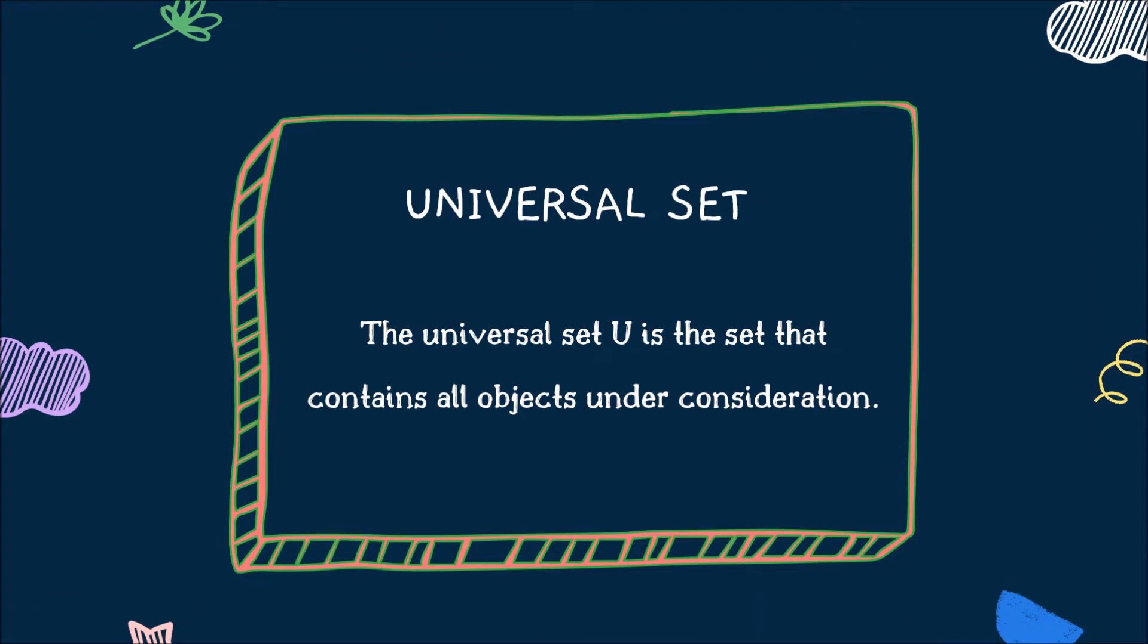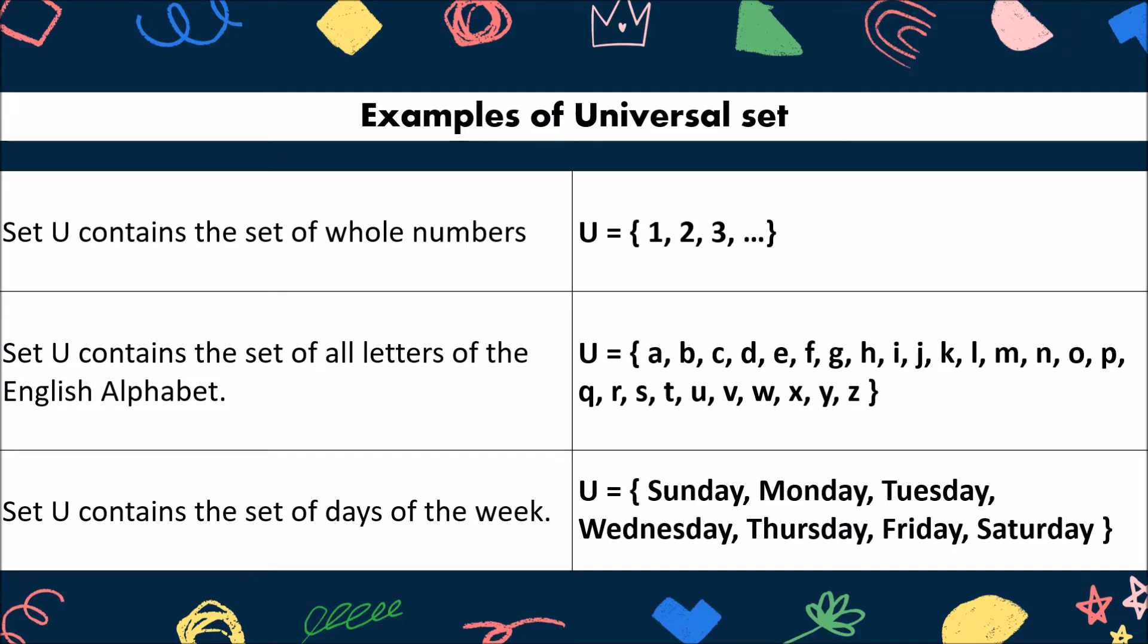Universal set. The universal set, denoted as capital U, is the set that contains all objects under consideration. Here are some examples of universal set. First, we have universal set U contains the set of whole numbers. Therefore, set U contains elements of whole numbers 1, 2, 3, up to infinity. To signify infinity, we use ellipses at the last part.